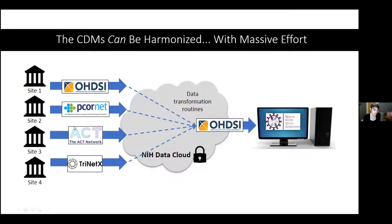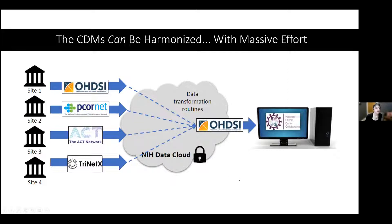For example, the ACT data model at the time didn't really support vital sign data, so once we got to Odyssey, ACT data was missing all vital data — it was clear which sites came from the ACT data model. PCORnet doesn't require a death date to record a patient as deceased, so patients with null death dates but who were clearly deceased were identifiable as coming from PCORnet. I think it's wonderful that we were able to harmonize this, but it's not always going to be the answer for every research study, and we may need some alternatives.